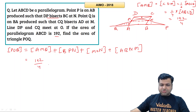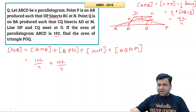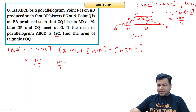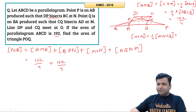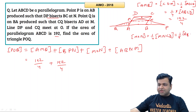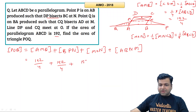Area of triangle MON is one-fourth of the area of parallelogram MNCD, which is in turn half of area of ABCD. So area of MON = one-eighth of the full parallelogram = 192/8. The parallelogram ABNM has area half of ABCD, so that is 192/2 = 96.